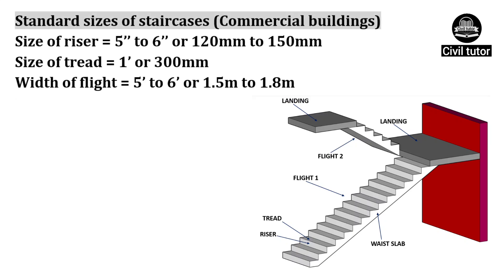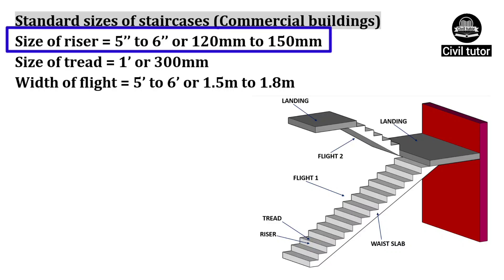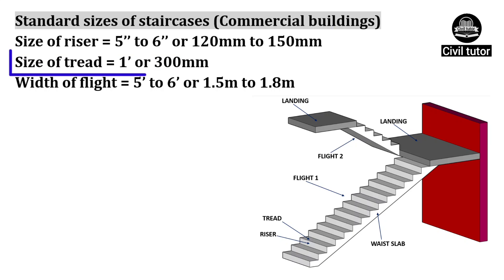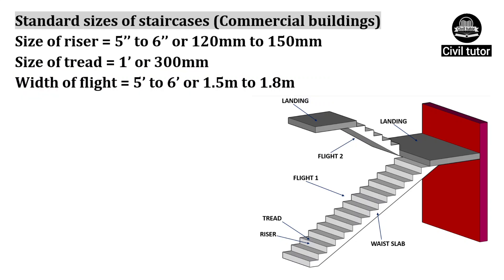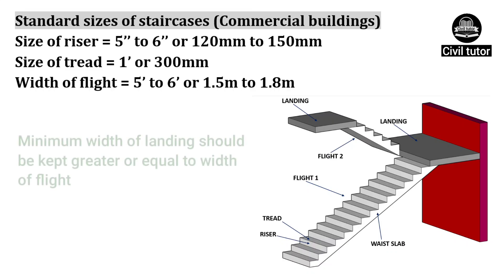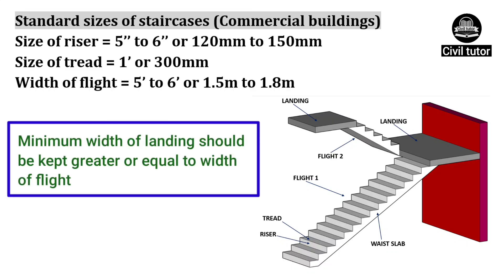The standard sizes of staircases for commercial buildings are: size of risers should be taken from 5 inches to 6 inches or 120 mm to 150 mm. The size of tread should be taken as 1 foot and the width of flight should be taken from 5 feet to 6 feet or 1.5 meter to 1.8 meter. It should be noted that the minimum width of landing should be kept greater than or equal to the width of flight.